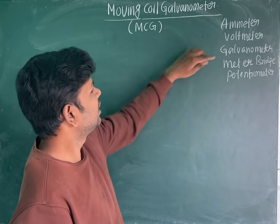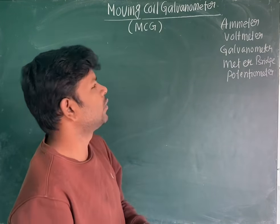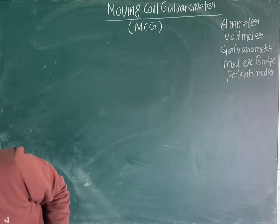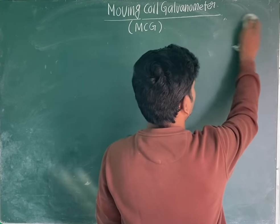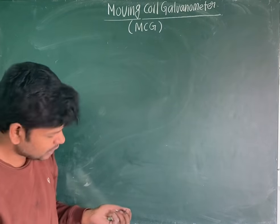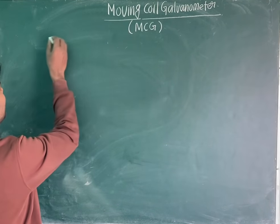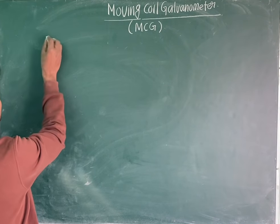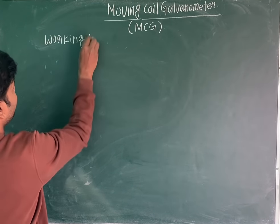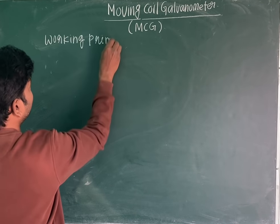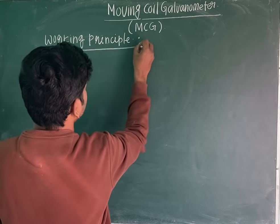We have already seen meter bridge and potentiometer. Now we will see the moving coil galvanometer, which is used to measure very small values of current and its direction. The working principle of moving coil galvanometer is: when a current carrying coil is placed in a magnetic field, it experiences a torque.